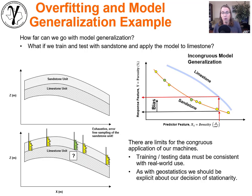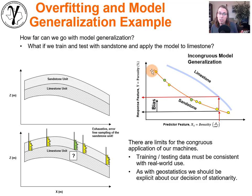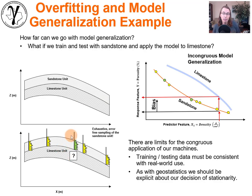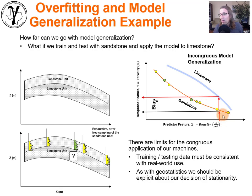There's another step when talking about generalization: we ask how far away from training can you go with the model? What is the extent or limit of our ability to generalize? Going very high or very low density — outside the range of the training data — is working out onto a cantilever, and we'd start to lose accuracy. But now imagine that limestone unit. We did all that training and testing with the sandstone unit.